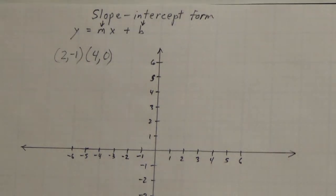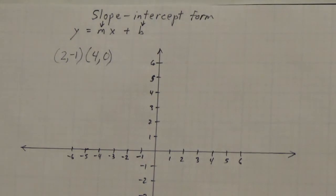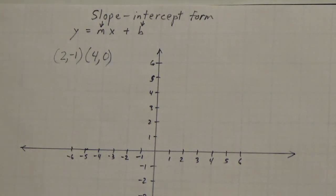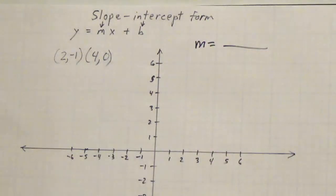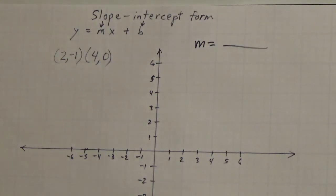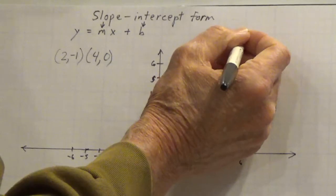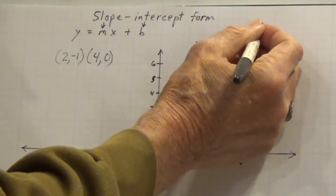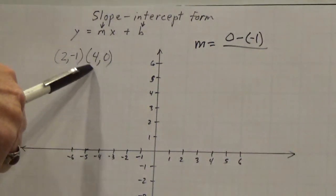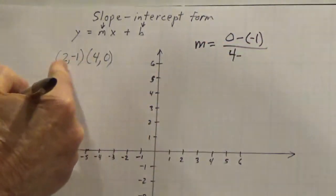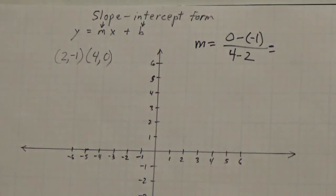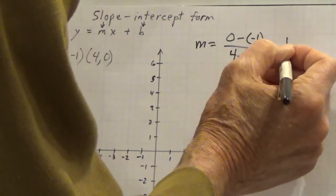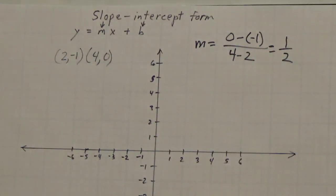So we have these two points and we want to find the equation in slope-intercept form. The first thing we want to do is find the slope. m equals rise over run — rise is a change in y. So we're going to subtract the y's: 0 minus negative 1, and since I start with this y, I have to start with this x: 4 minus 2. So we have 0 minus negative 1 is 1 — minus negative is plus — and 4 minus 2 is 2. So m is 1 half.